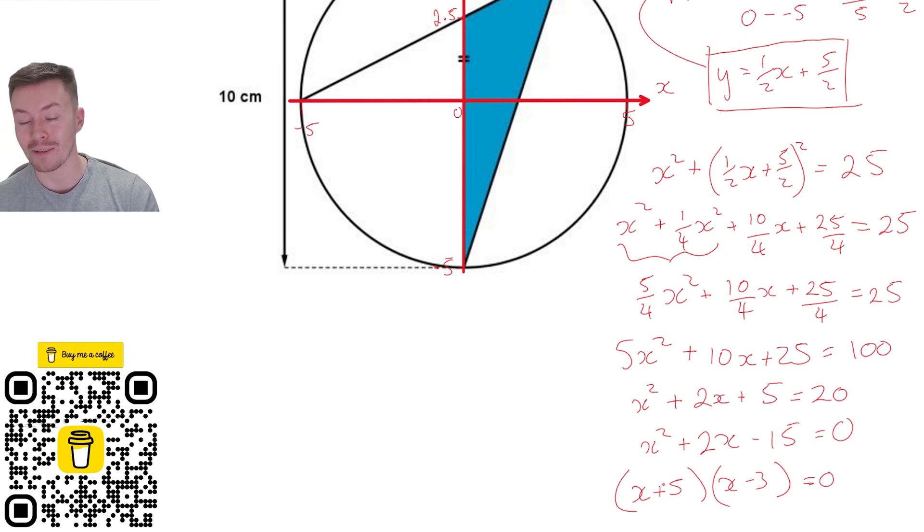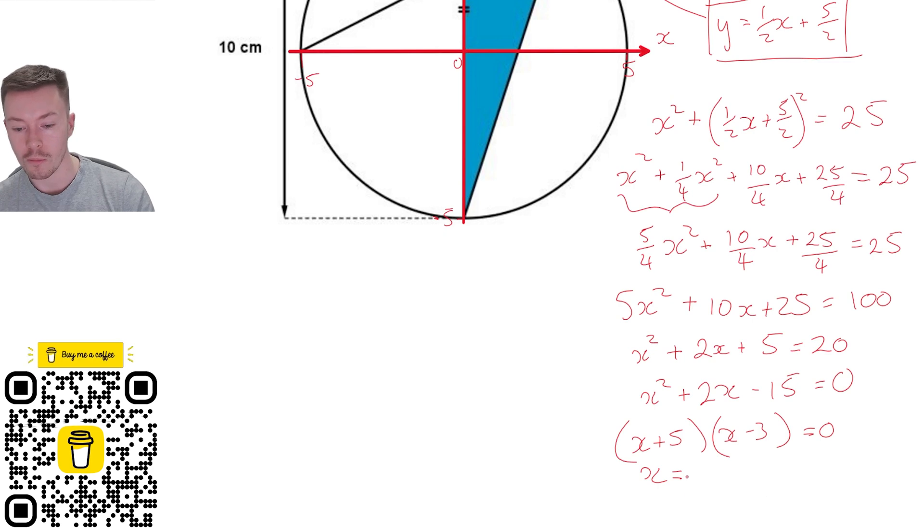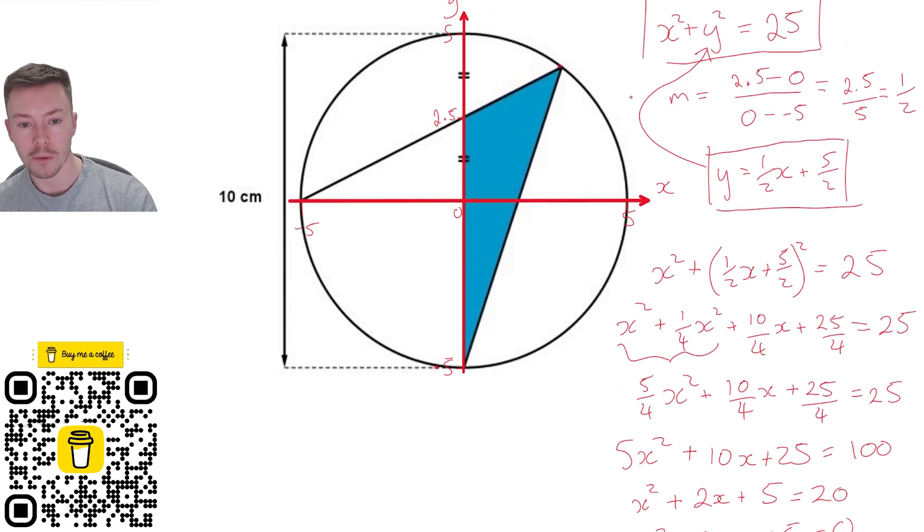I should have presumed that was going to be x plus 5 because I know one of my roots is minus 5. So I get my two roots as x equals minus 5 or x equals 3. The minus 5 one was already on the diagram, but that tells me that this here, the apex—if we're using the left-hand side as the base—that's going to be an x coordinate of 3.